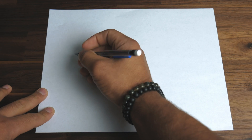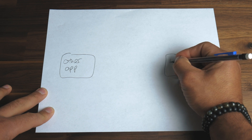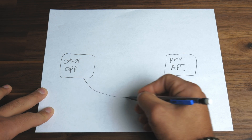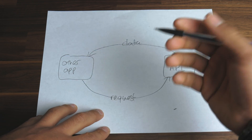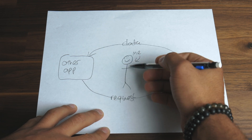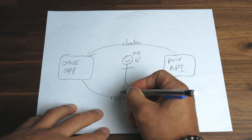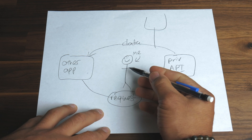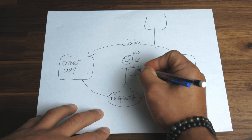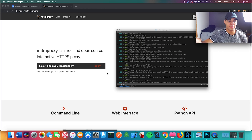Here's the plan: the other app makes requests to the private API, which sends back data. I need to play the man in the middle — I need to intercept those requests, see how the other app is sending them, and then make my own requests so I can get back my own data from this private API.